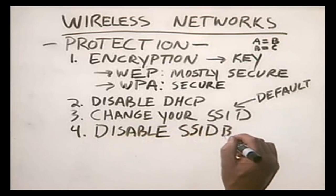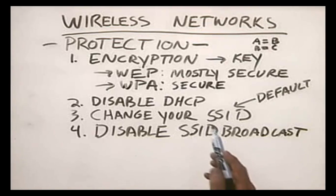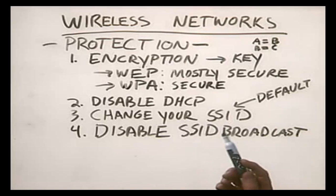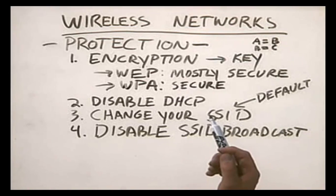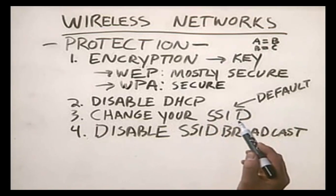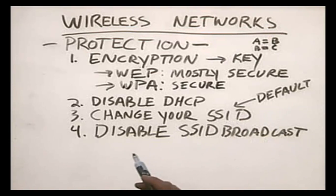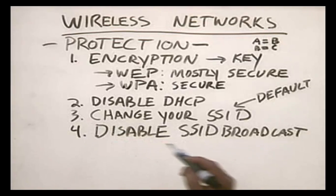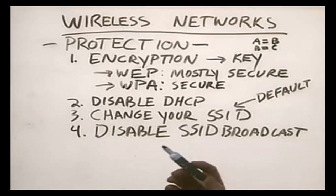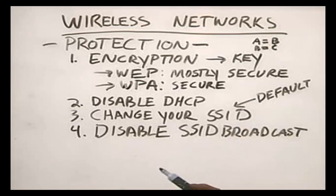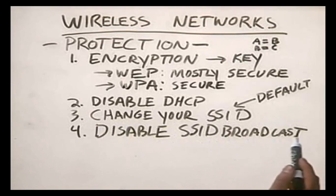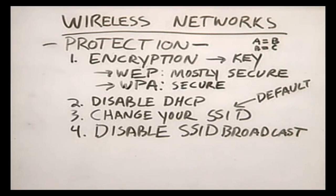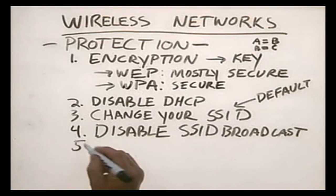The next thing you should do is disable your SSID broadcast. By default, most wireless access points actually broadcast their SSID to everybody — essentially announcing their name to anyone who wants to hear it. You don't even have to figure out the SSID; it's handed to you on a silver platter if SSID broadcast is enabled. If you disable the SSID broadcast, it becomes much harder for someone standing outside your company with a wireless network card to connect to your wireless network.